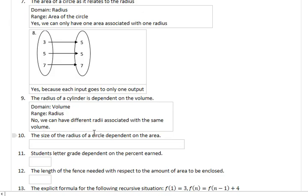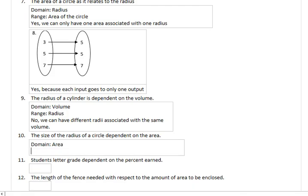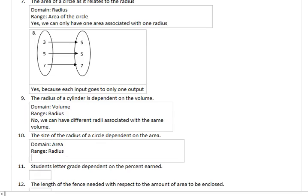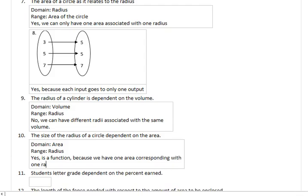The size of the circle depended on the area. Domain is area, range is radius. If we have one area, is it associated with exactly one radius? And the answer in this case is yes. This is a function because we have one area corresponding with one radius.